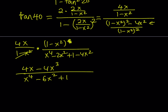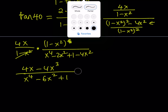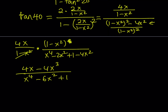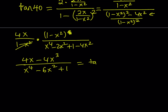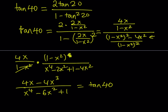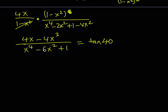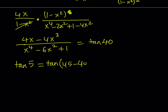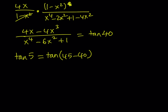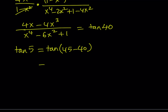The bottom is going to be x to the 4th power minus 6x squared plus 1. But this is just the tangent 40 value. Now, this is tangent 40, but obviously that's not what I need — I need to find the value of tangent 5. How are 40 and 5 related? 40 plus 5 is 45. So tangent 5 can be written in terms of tangent 40. I can write it as tangent of 45 minus 40. And since I know tangent 40 in terms of x, I can find tangent 5 in terms of x.